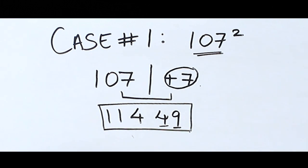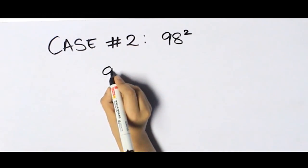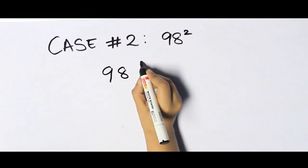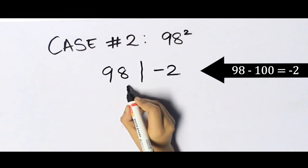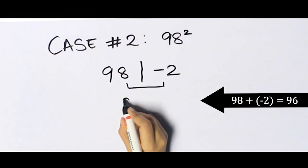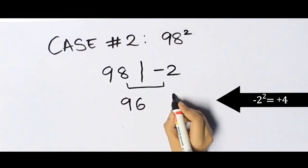Case number two: 98 squared. We'll write the original number. This number is 2 less than 100, which gives us minus 2. Adding these two will give us 96, and the square of minus 2 is 4.